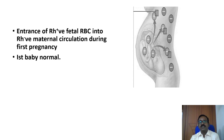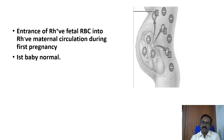Erythroblastosis fetalis involves the entry of Rh positive fetal cells into the Rh negative maternal circulation during the first pregnancy. This usually occurs after delivery of the first baby, during clamping of the umbilical cord, when some fetal blood enters the maternal circulation.